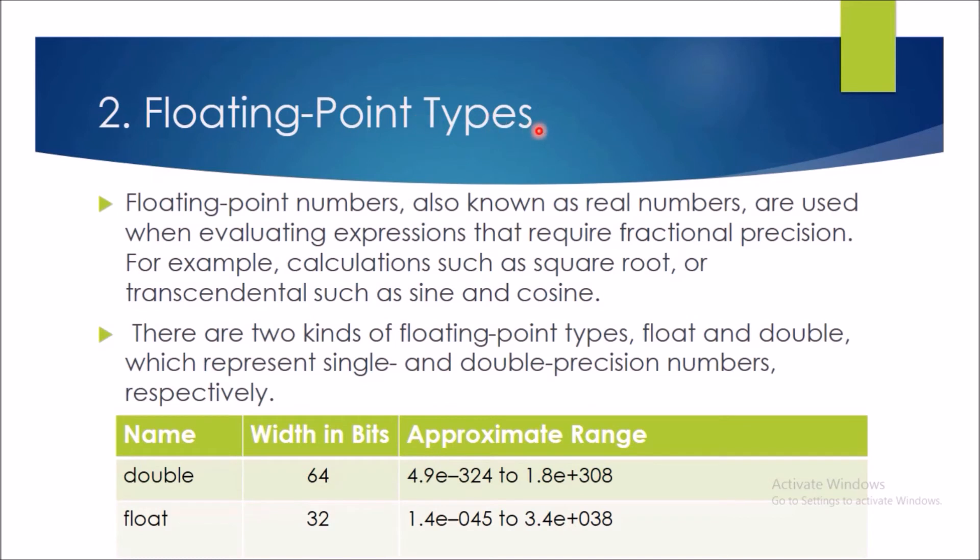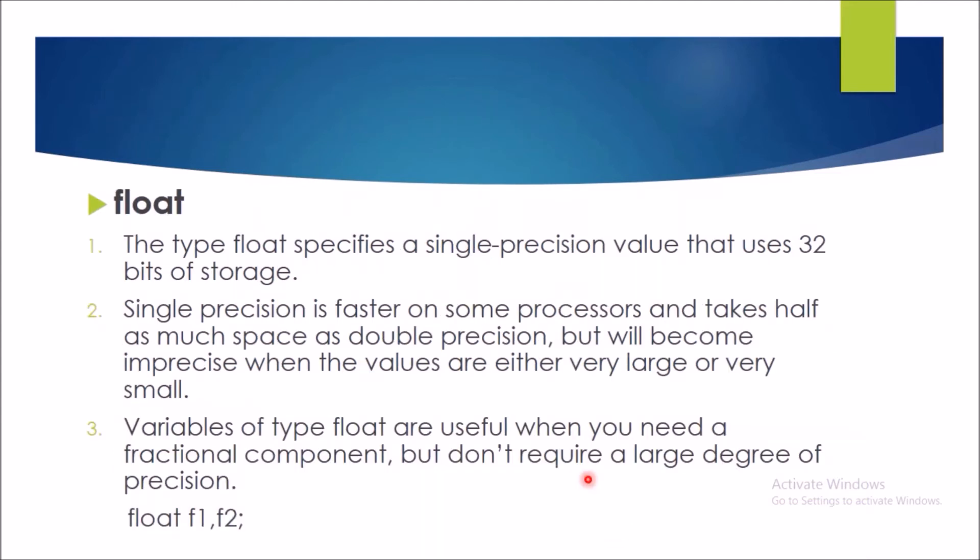Now, the second thing is the floating point types. Now, floating point numbers are the real numbers in which we have the decimals and all the transcendental functions like sine and cosine all the functions will return the floating type values. So, there are two types of floating points. First one is double and second one is float. Float has 64 bits and double is 32 bits. This is the range of the floating type.